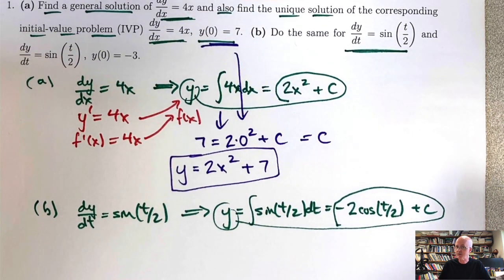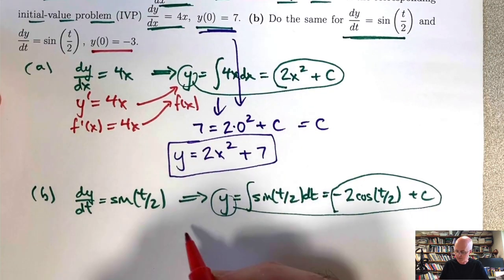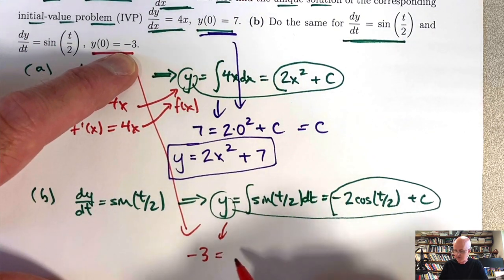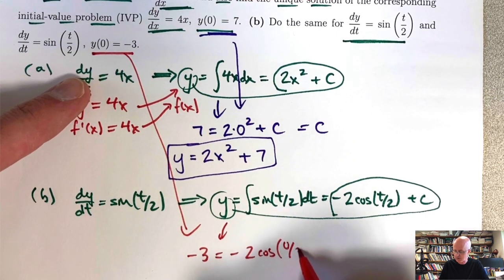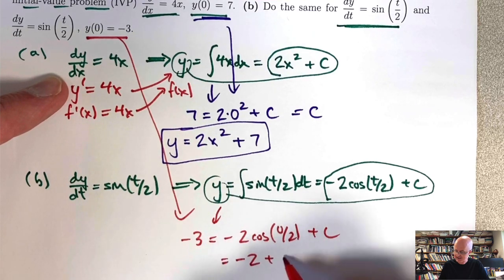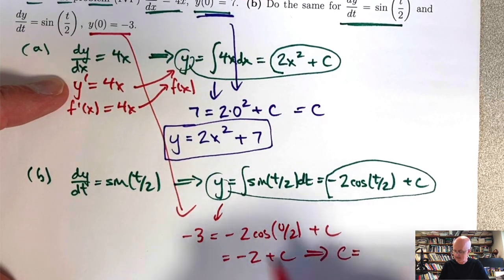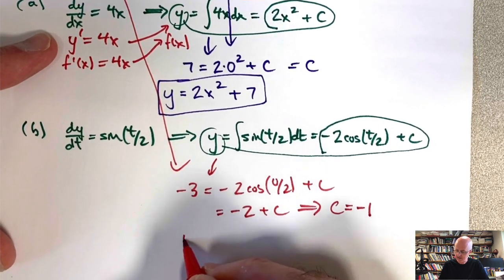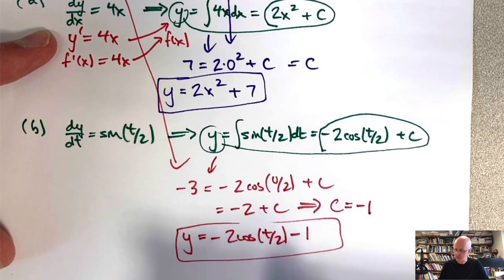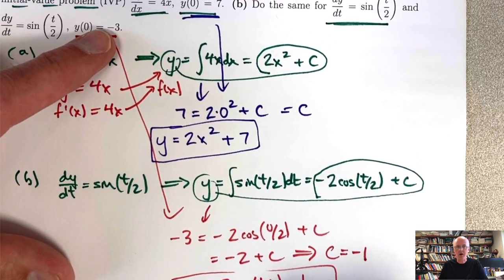All functions of this form solve the differential equation. Now we solve the initial value problem with y(0) = -3. Replace y with -3 and t with 0: you get -2 cos(0) + c = -2(1) + c = -2 + c. Setting that equal to -3 and solving for c gives c = -1. The unique solution becomes y = -2cos(t/2) - 1. When you plug in t = 0, you get -2(1) - 1 = -3, satisfying the initial condition.